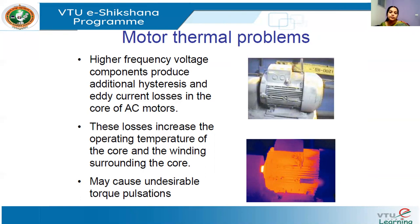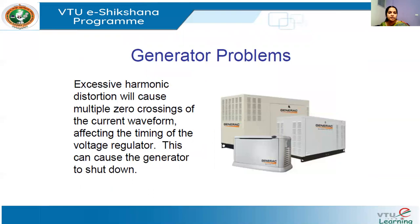Generators also have problems with harmonics. You have a voltage regulator to control the generator voltage. With harmonics — fundamental, third, fifth harmonics, each at higher frequencies — there are many zero crossings. These are not the actual zero crossings of the main waveform; the harmonics cause multiple false zero crossings in the current waveform, which affects the timing of the voltage regulator. This will cause shutting down of the generator.